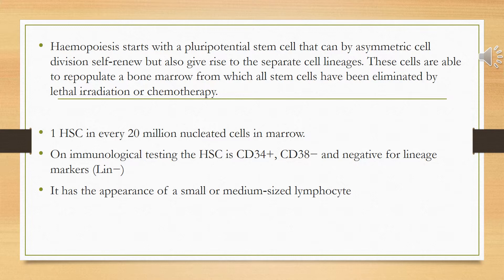Hemopoiesis starts from a single stem cell known as the pluripotent stem cell. The pluripotent stem cell divides and forms new lineages — three categories or lineages: the erythrocyte lineage, responsible for the formation of red blood cells; the thrombocyte lineage, responsible for the formation of megakaryocytes; and the third lineage responsible for the production of all types of leukocytes, like granulocytes and agranulocytes.